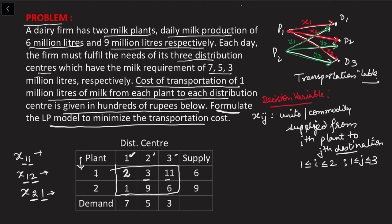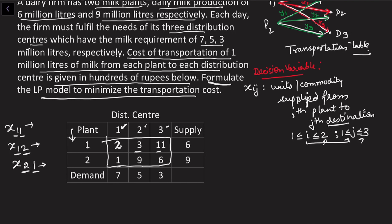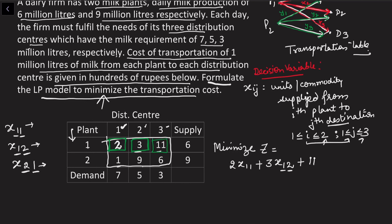There are two plants (i = 1, 2) and three destinations (j = 1, 2, 3), giving six decision variables total. The objective is to minimize transportation cost. Per unit cost from plant 1 to distribution center 1 is 2, and we supplied x11 units, so the cost is 2·x11. Adding all routes: minimize Z = 2x11 + 3x12 + 11x13 + 1·x21 + 9x22 + 6x23.